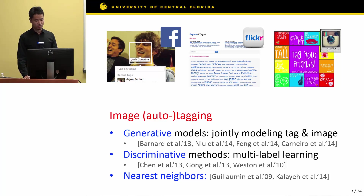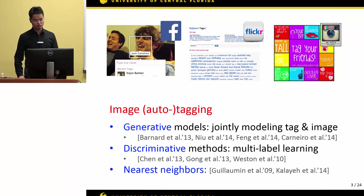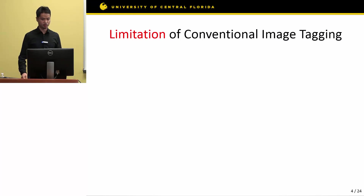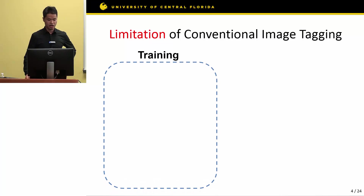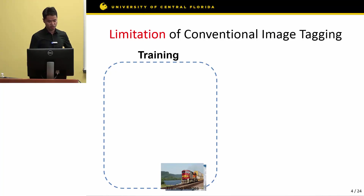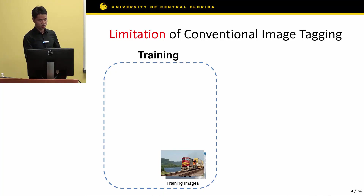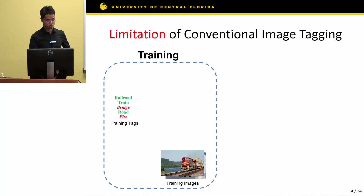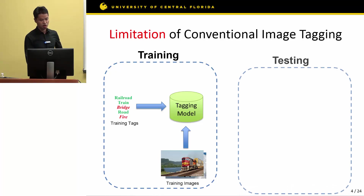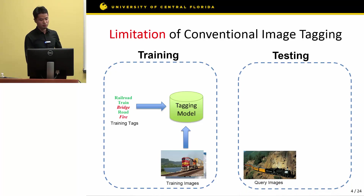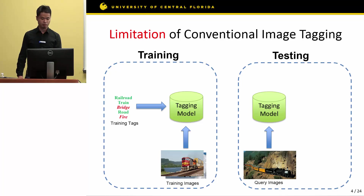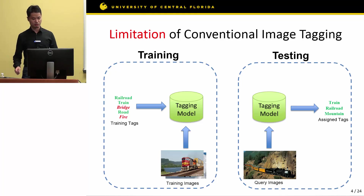All of these are conventional image tagging methods, and the conventional image tagging pipeline has certain limitations. Let's first look at the pipeline. In the conventional image tagging method, there are two stages. Stage one is training: we are given training images and their corresponding training tags, and from those we can train a tagging model. At the testing stage, when given a query image, we feed it to the previously trained tagging model, which assigns a bunch of tags to the query image.